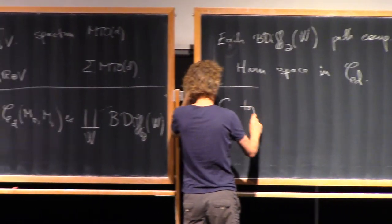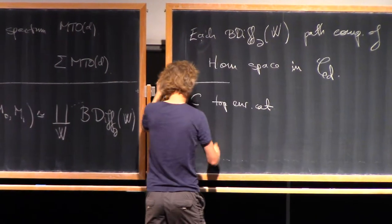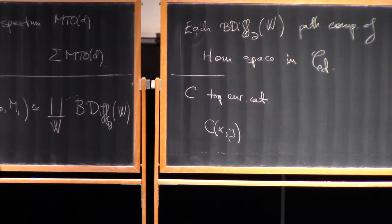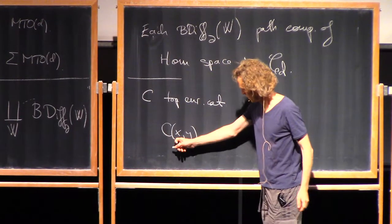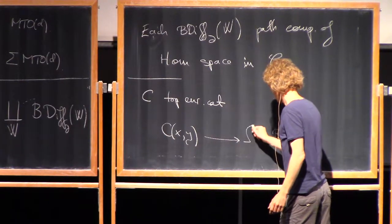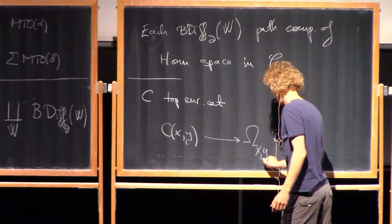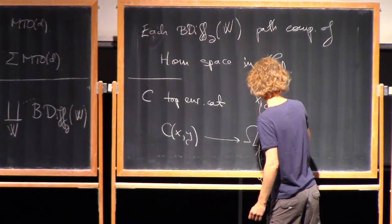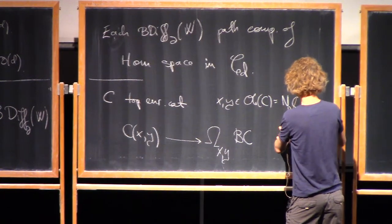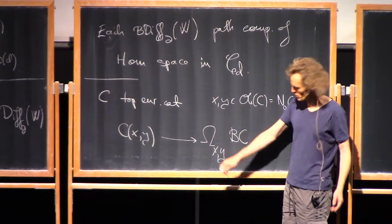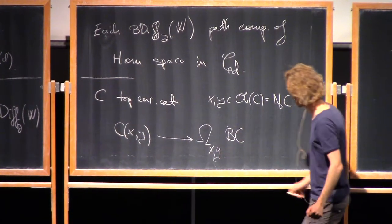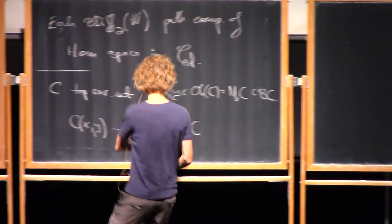So in general, if I have a topologically enriched category, the best you can say is that there is a map from hom xy, that's a space, to the space of paths starting at x and ending at y. So x comma y are in the object space of C, which is n0 of C, which sits inside BC. Omega is like loop space, but instead paths starting at x and ending at y. This is, again, just by construction of BC.